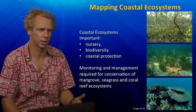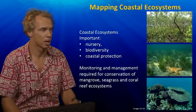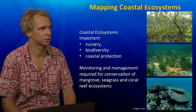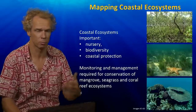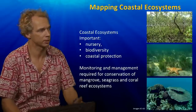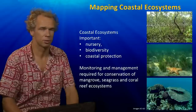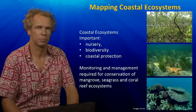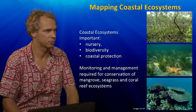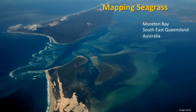We need to take care of these ecosystems because there are local impacts, as you probably know from previous lectures. Monitoring and management is therefore important, and it requires information about these systems. If you take for instance this area on the east coast of Australia called Moreton Bay, this is a seagrass habitat.